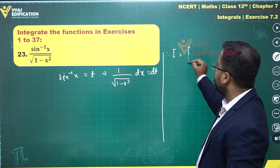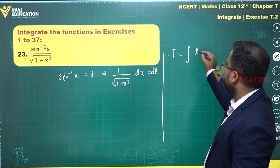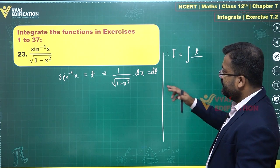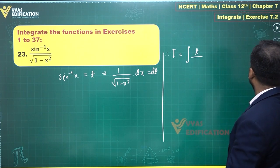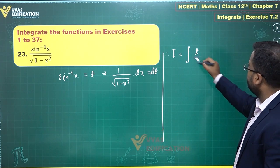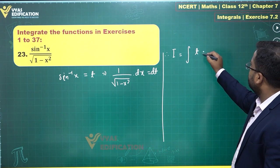Therefore the integral becomes equal to t times dx upon root of 1 minus x square, which is actually dt. So there is no need for the denominator, this is just dt.